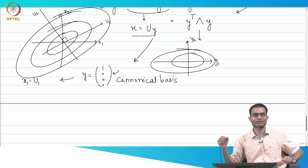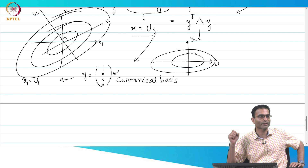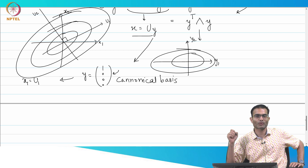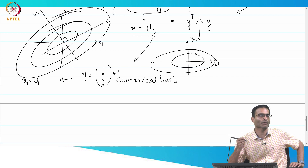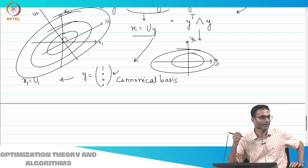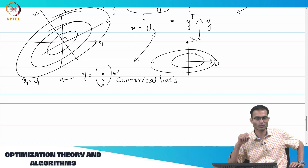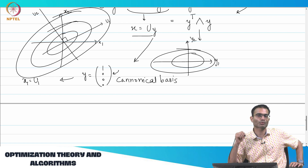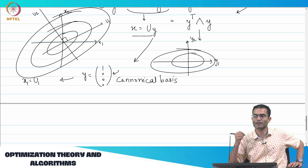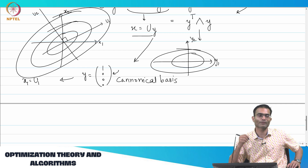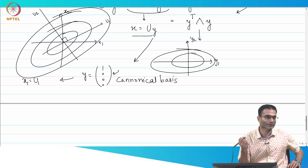As mentioned at the start of this module, we are going to try something a little bit more clever than just going along a descent direction. To build up to that, we want to generalize our ideas, particularly of orthogonality.